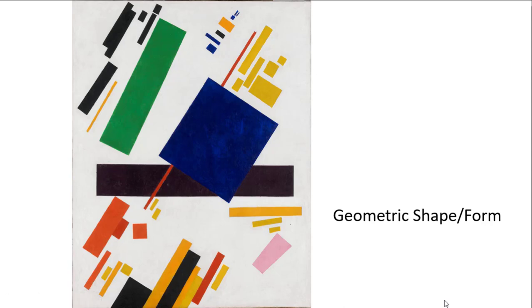It could be flat, but it might be three-dimensional. That would be shapes that are based on more mathematical sorts of shapes. Think of things like squares, rectangles, and circles. If we're talking about forms, we're talking about cubes, pyramids, and spheres. Think about things that are a little bit more precise with angles, that sort of thing.